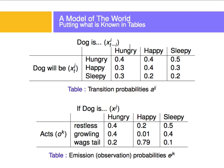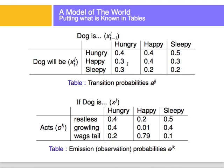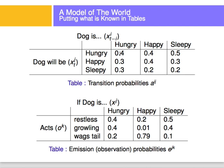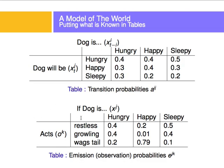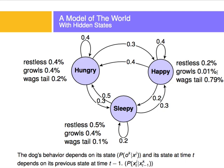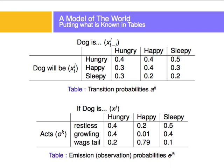This whole model can also be expressed in tables. For the transition probability table, the columns represent the past state and the rows represent the future state — one time step ahead. If the dog is hungry, it will be hungry again with 0.4 probability. If the dog is happy, it will be sleepy with 0.2 probability. The emission probability table shows: if the dog is hungry it will be restless with 0.4 probability; if happy, it will growl with 0.01 probability.